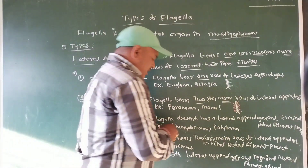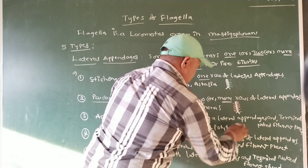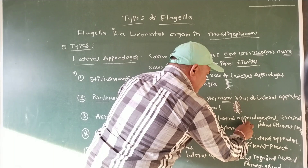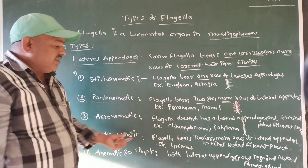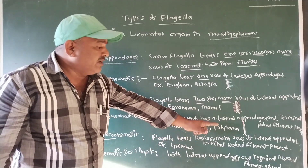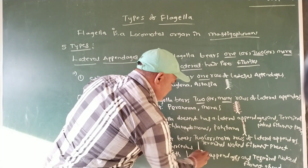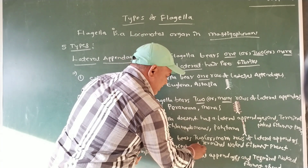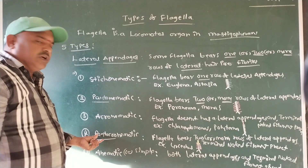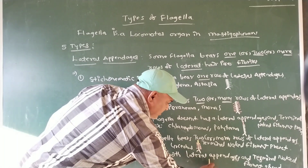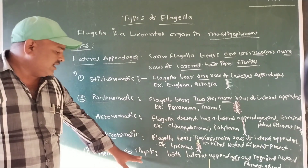Acronemotic — the flagella outer sheath has no lateral appendages, but the terminal end has a naked filament — called acronemotic. Pantachronemotic — the flagellum bears two or many rows of lateral appendages and a naked terminal end is present — called pantachronemotic. Anemotic — the flagella has no lateral appendages and the terminal naked filament is absent — called anemotic or simple mnemotic.